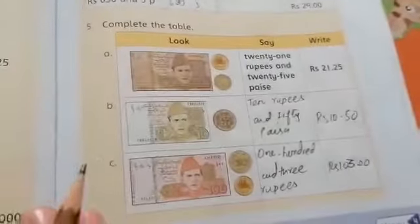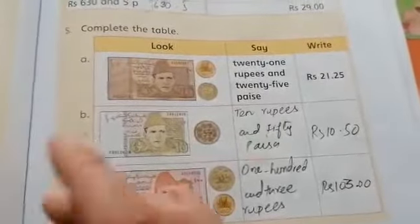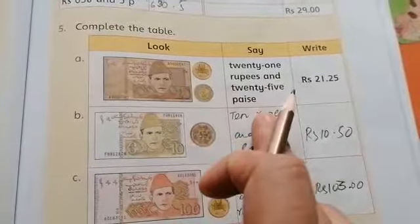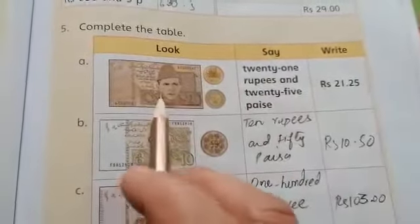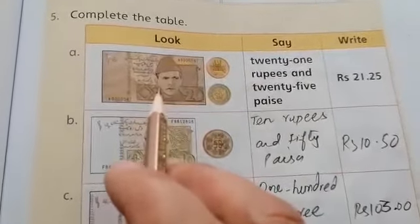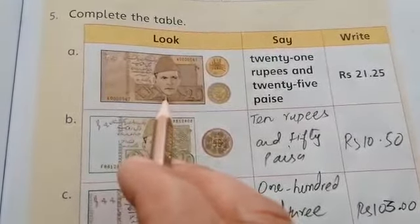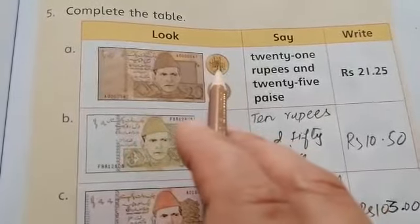Question number 5. Complete the table. Look, say and write. The first one. How many Rupees, look 20 and 20. This is 25 paisa. It is 1 Rupees.